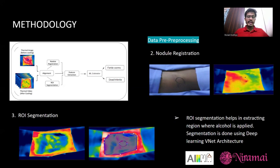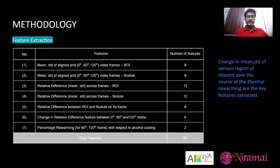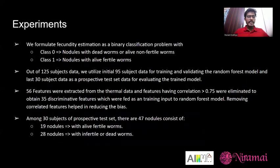Once we obtain the ROI and the stabilized video frames, we perform feature extraction. From all the data available, we capture four frames: the aligned static image, and three frames from the video at 0, 60, and 120 seconds. We calculate the mean and standard deviation for various regions of interest — the nodule region and the surrounding area — and find the relative differences between them. The idea is to identify how mean and standard deviation change over time, and how much the thermal rewarming relates to the amount of alcohol applied. Approximately 56 features are extracted in total.